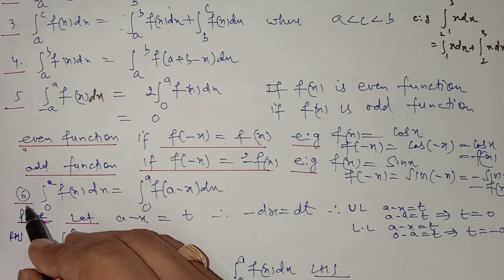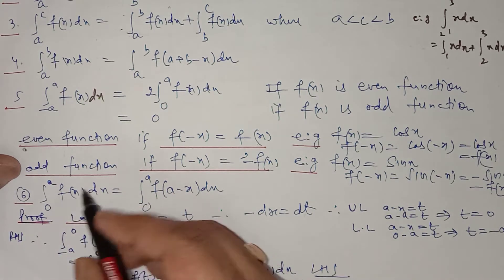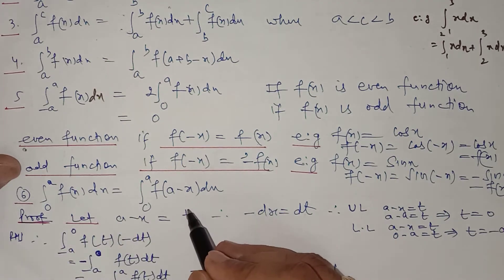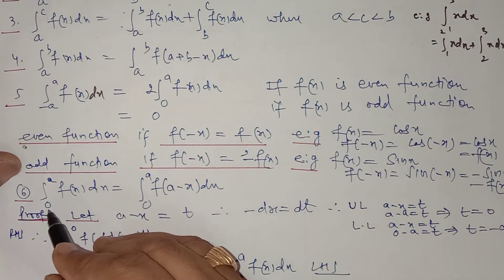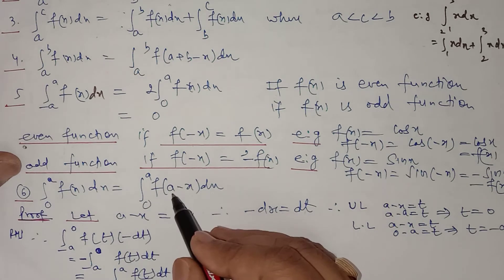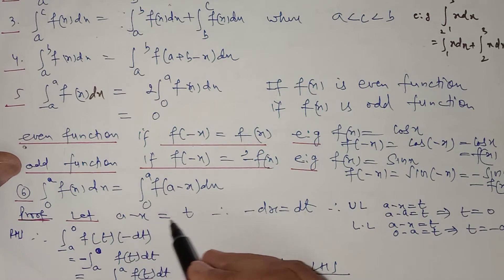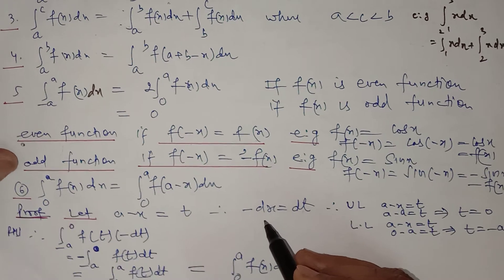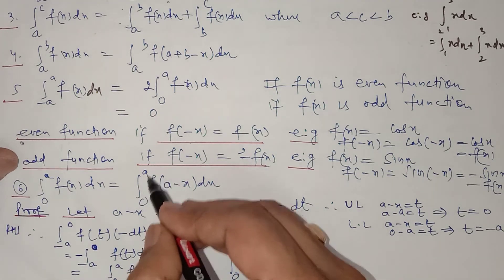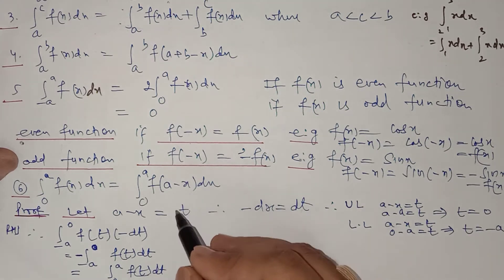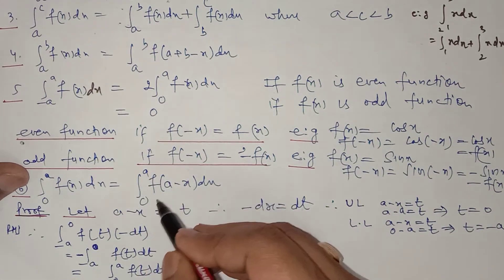There is a very important property: if there is a definite integral from 0 to a of f(x) with respect to x, we can replace x by (a − x). We will now prove this property. We need to prove that the integral from 0 to a of f(a − x) dx equals the integral from 0 to a of f(x) dx. Let a − x = t, so −dx = dt, meaning dx = −dt. Since we have changed the variable from x to t, we must also change the limits in terms of t.